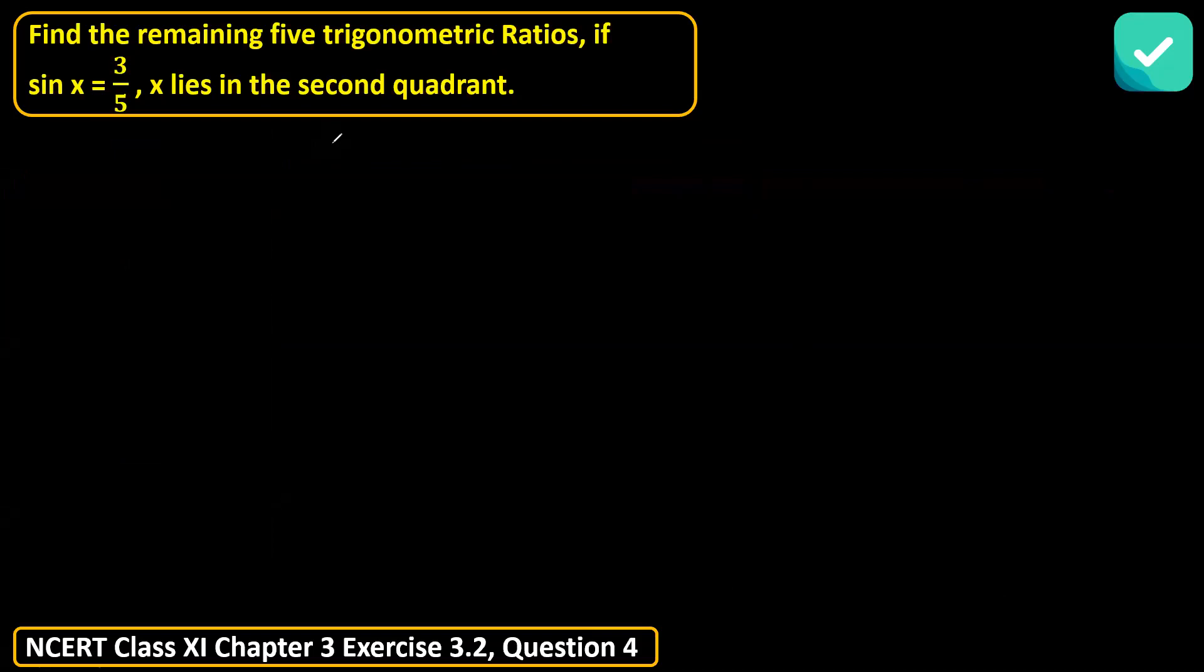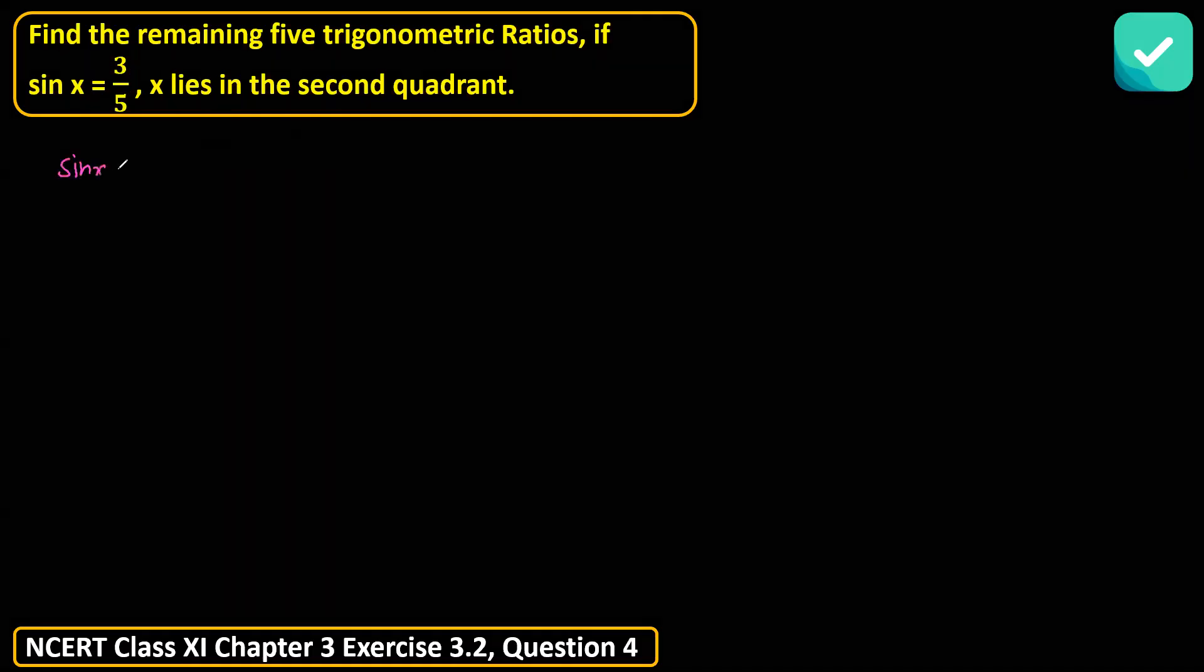Hi, good morning, welcome to Insta-Solve. Here we'll see the first question related to trigonometric ratios. Find the remaining five trigonometric ratios if sin x equals three over five, x lies in the second quadrant. Let us solve this question. You are given sin x equal to three over five and they're telling x lies in the second quadrant.